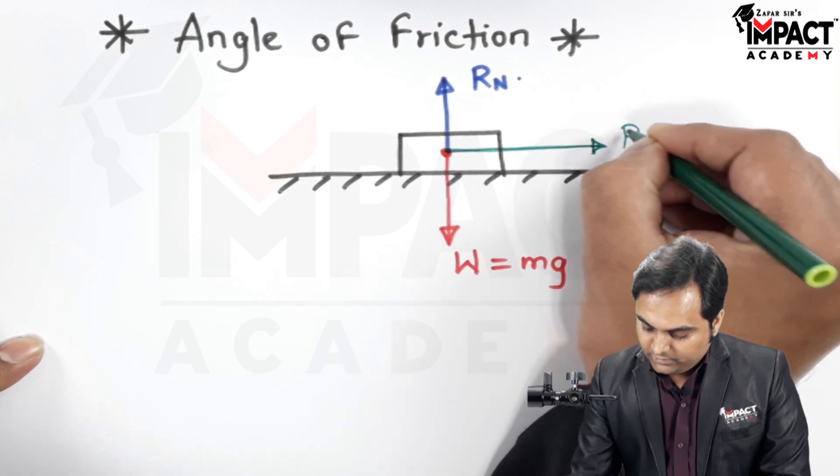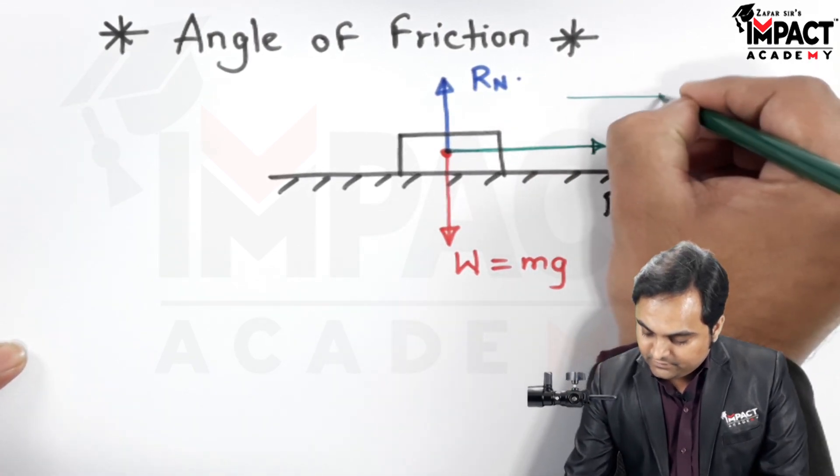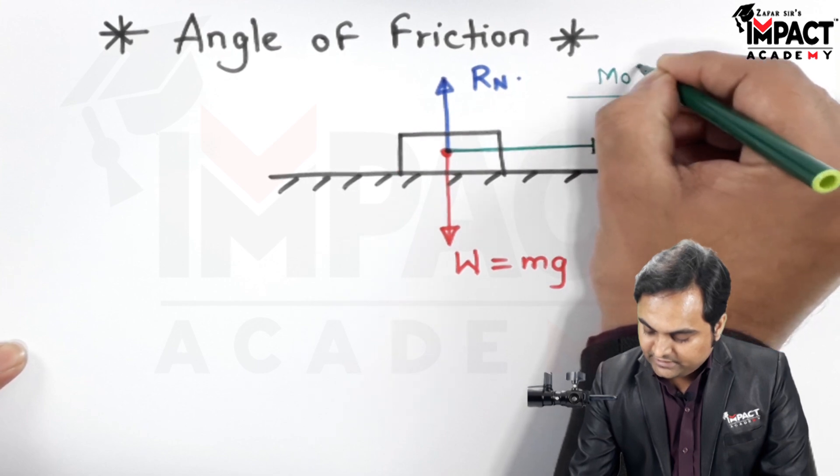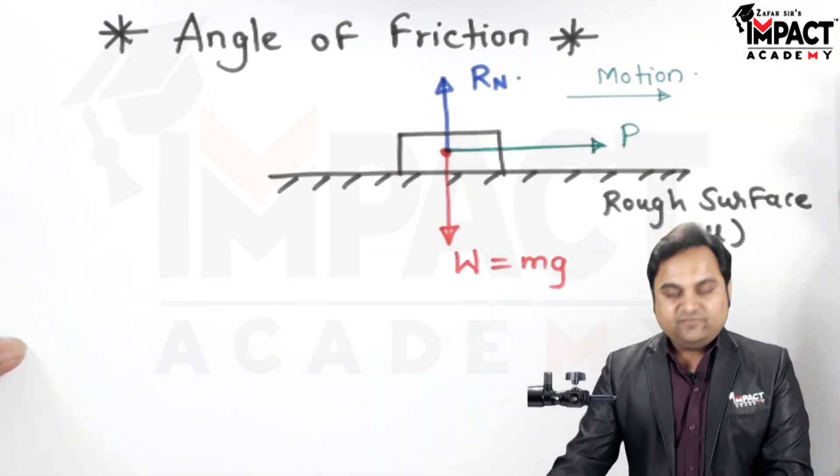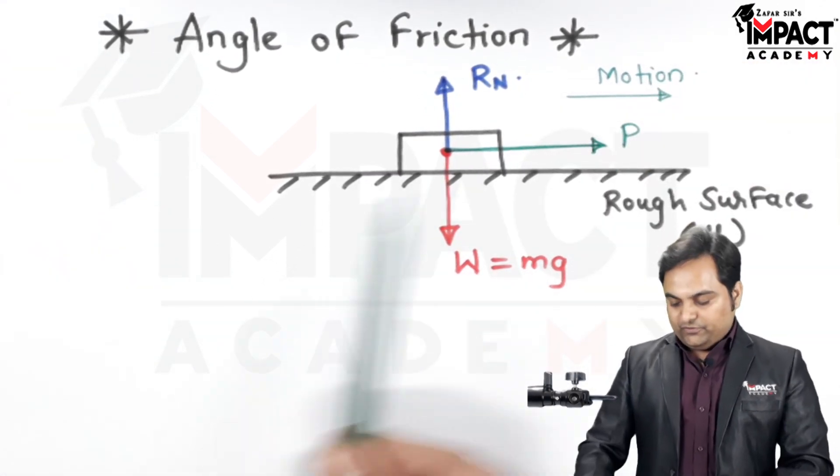So a pull is applied towards right, it means the motion is towards the right end and we know frictional force is opposite to motion.